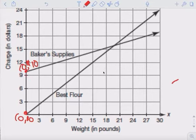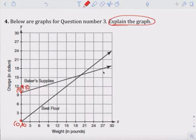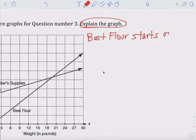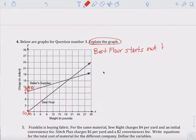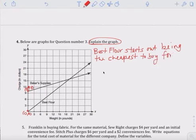Okay, it's about nine, ten, eleven, and twelve. Okay. So it starts out, Best Flour starts out being the cheapest place to buy flour. Best Flour starts out being the cheapest to buy flour. At zero pounds for zero dollars.